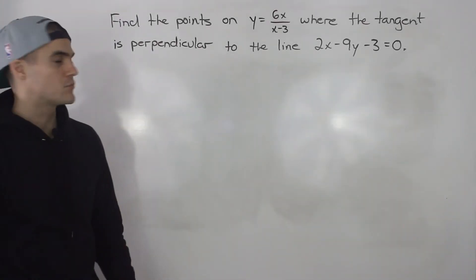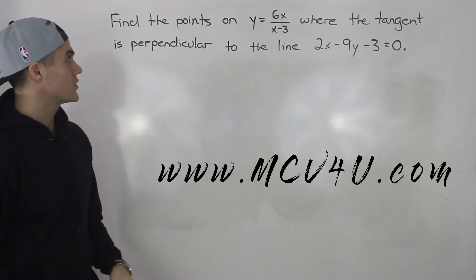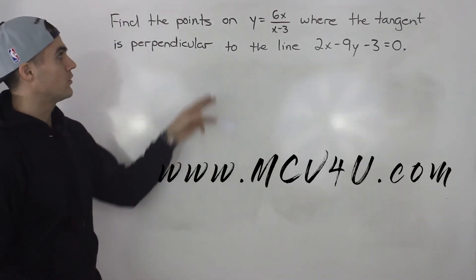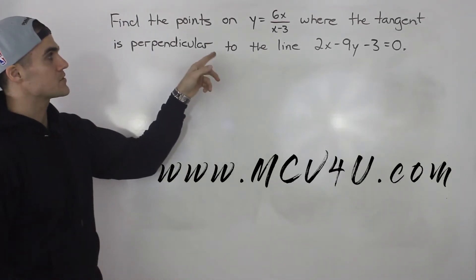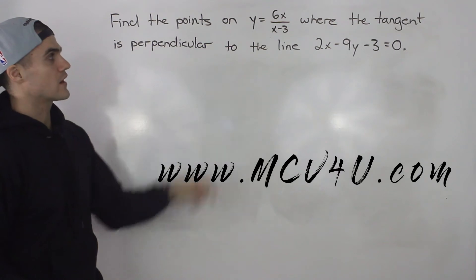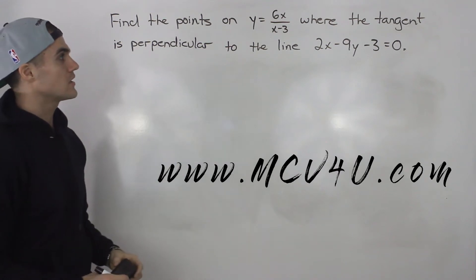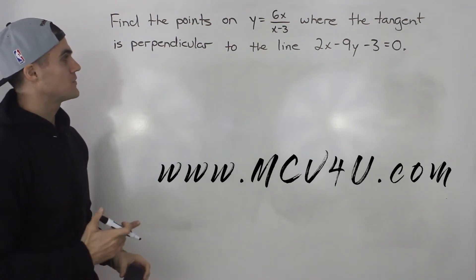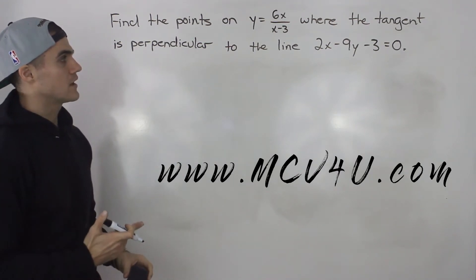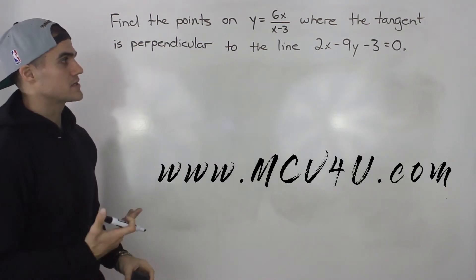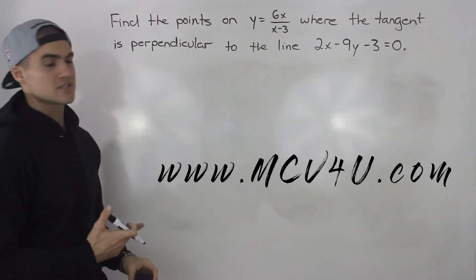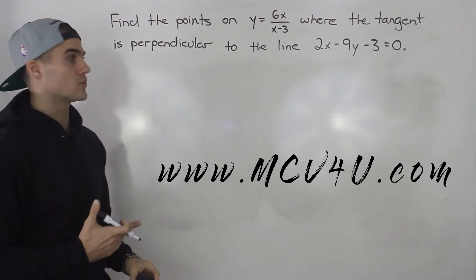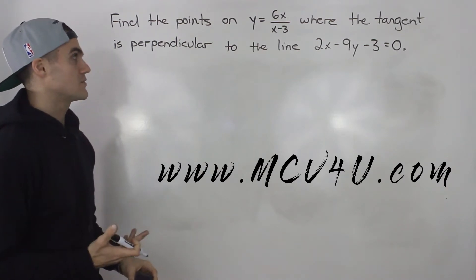Welcome back. Moving on to another question, we have to find the points on y equals 6x over x minus 3, where the tangent is perpendicular to the line 2x minus 9y minus 3 equals 0.